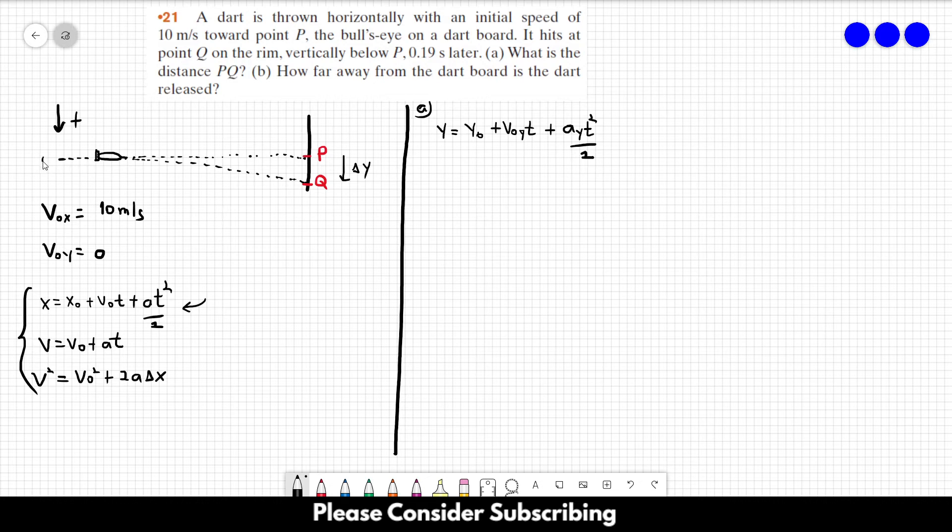Let's say this is y equals zero. P is y equals zero. So this term goes away. So y equals, the initial velocity in the y direction is zero as well. So this equals the acceleration in the y direction times t squared over 2.